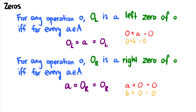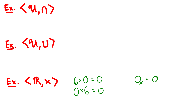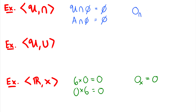A zero element is this element — or even a set in some cases — that pulls whatever it's working with back to itself. For multiplication of real numbers, the zero is just zero. What about intersection? If I take any set A intersected with the empty set, I get the empty set back. So the zero for intersection is the empty set — in this case it's not a number but a set, and the operation is intersection.